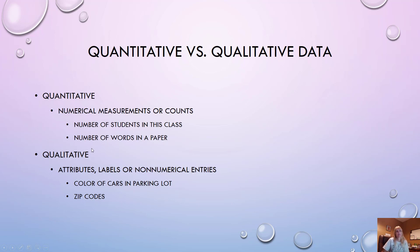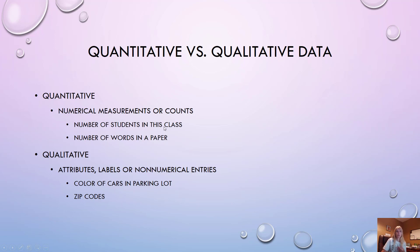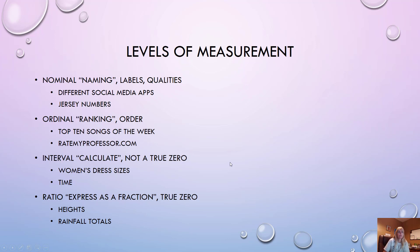Quantitative versus qualitative: quantitative means numbers you can count — but not just any numbers. Zip codes, for example, are numbers, but I think of quantitative as numeric data you could add, subtract, divide, or multiply and it makes sense. Have you ever multiplied a zip code? Quantitative is numerical data you'd actually do calculations with. Qualitative is labels — like colors of cars.